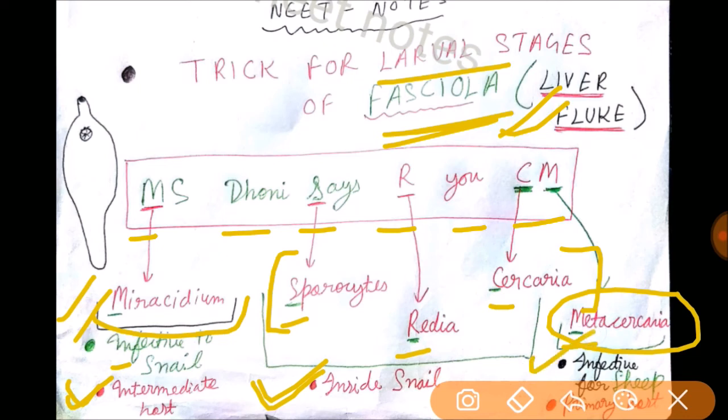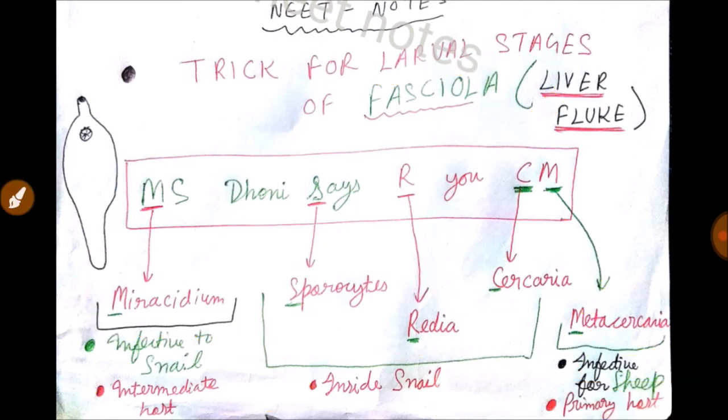Now let me tell you the difference between primary host and secondary host. Secondary host is also called intermediate host. Basically, primary host is the adult, mature, and sexually reproducing form, while secondary host is not sexually reproducing and is not mature.